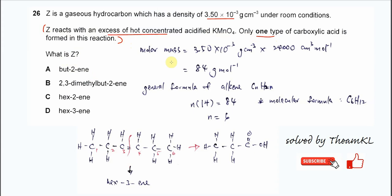Let's start with the calculation and get the molar mass. Molar mass of this hydrocarbon Z, we need to use the density times the molar volume because this one is gas.